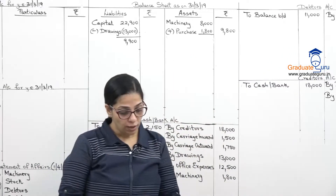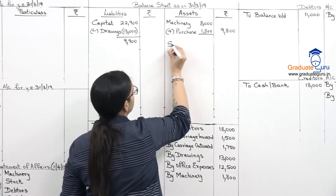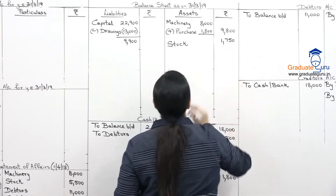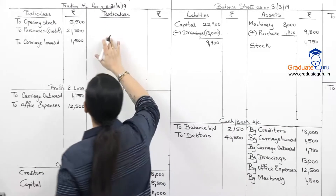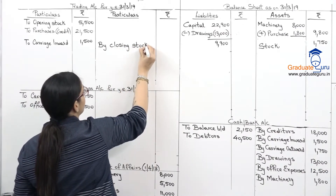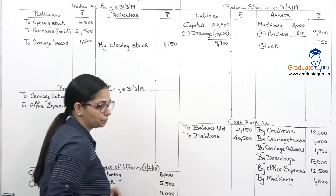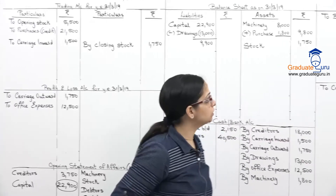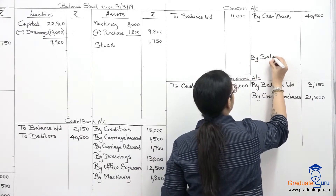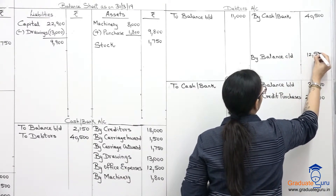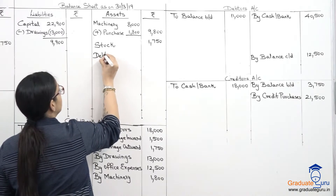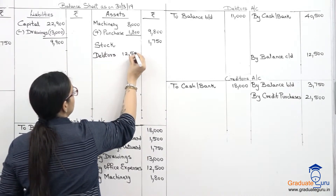Recording closing balances. Machinery closing balance is calculated after depreciation — simply the total goes as closing balance in the balance sheet. Closing stock is given as 1,750 — second effect to trading account as by closing stock 1,750. Closing dators is 12,500 — in dators account as balance carried down, and inner column of balance sheet asset side at 12,500, since there is an RDD adjustment.